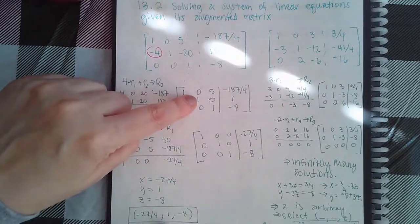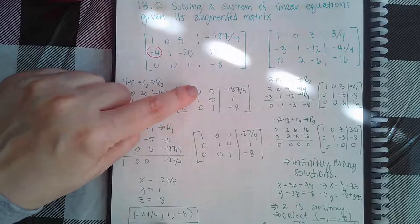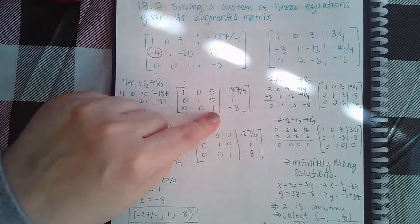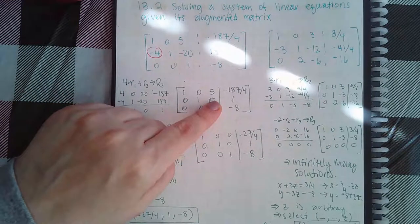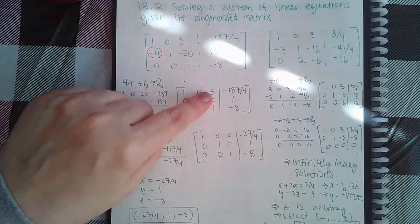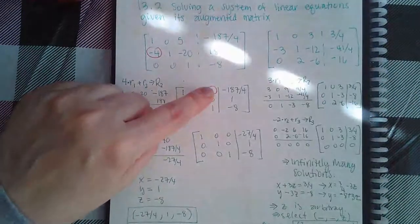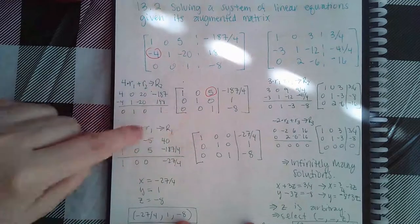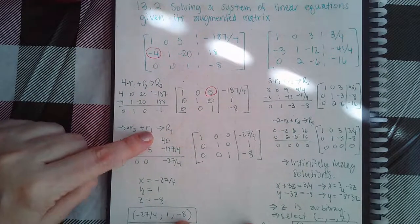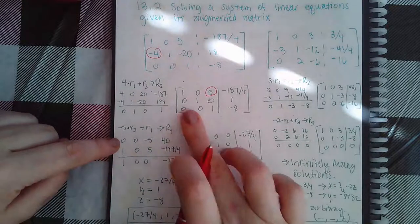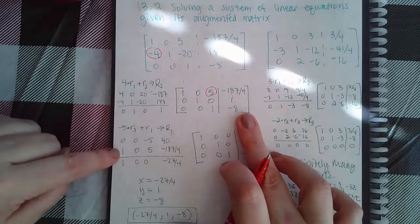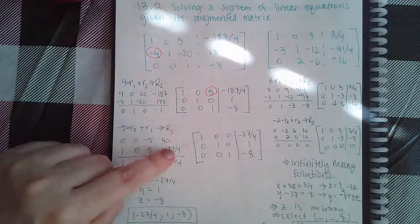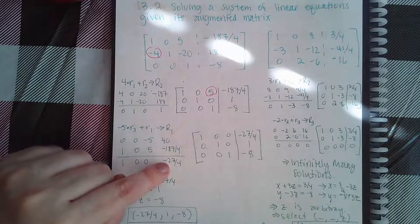Next I look at this column — it's already a one and these are already zeros, so I don't need to do anything here. In the last column this is already a one and this is already a zero, so the only thing I need to do is make this entry a zero. To do that I need a negative five, so I multiply by negative five: negative five times row three plus row one. This is all entries in row three multiplied by negative five, then row one underneath. I did this computation in my calculator and this is what I found.